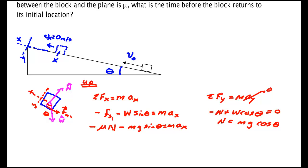I now may substitute this in for the normal. I get minus μmg cos θ minus mg sin θ is maₓ.